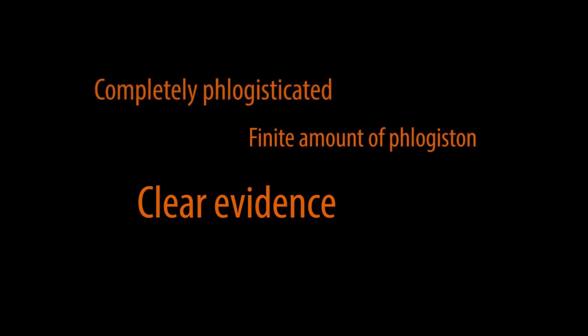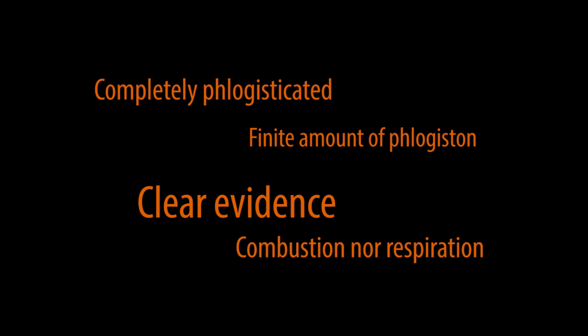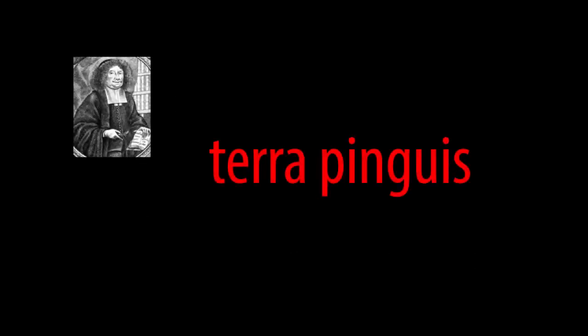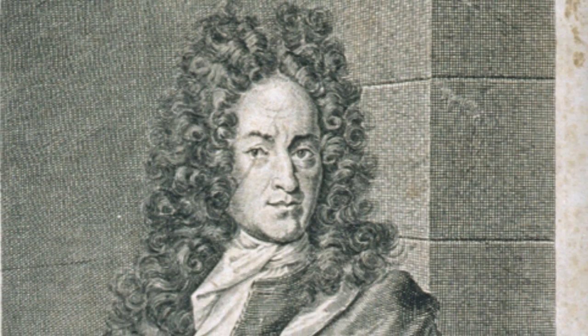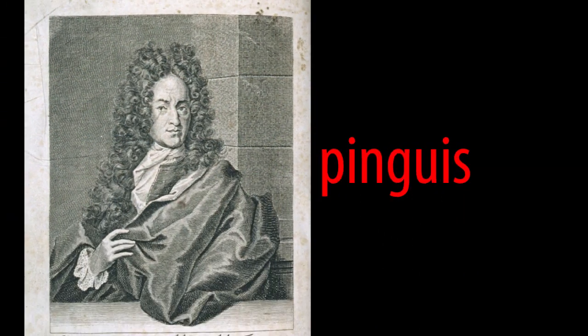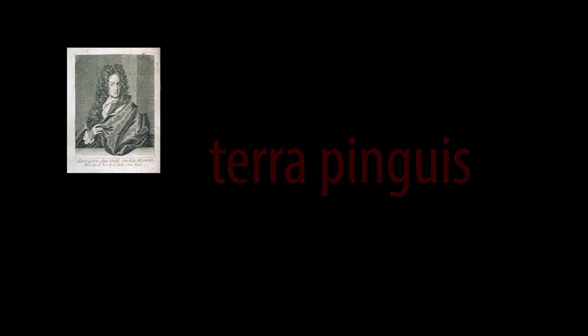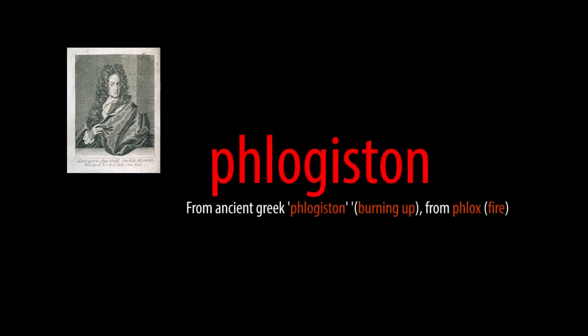When air had become completely phlogisticated it would no longer serve to support combustion of any material, nor would it support life, because the role of respiration was to remove phlogiston from the body. Becker had not originally named this substance Terra Pinguis, but in 1703 George Ernest Stahl, German professor of medicine and chemistry, proposed a variant of the theory in which he renamed Becker's Terra Pinguis to phlogiston, and it was in this form that this incorrect theory had its greatest influence.